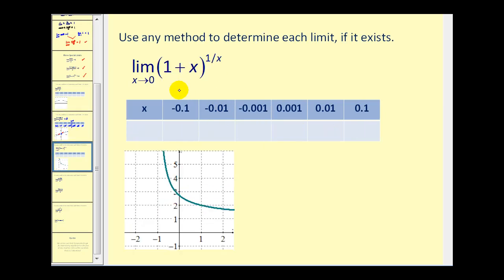The last limit we're going to look at is the limit of one plus x to the power one over x. Again, looking at the graph, you can see this function would be undefined at x equals zero, so there would be a hole here, but we can still approach from the left and the right, so this limit exists. You can see it's approaching a value less than three. Remember, e is approximately 2.718.